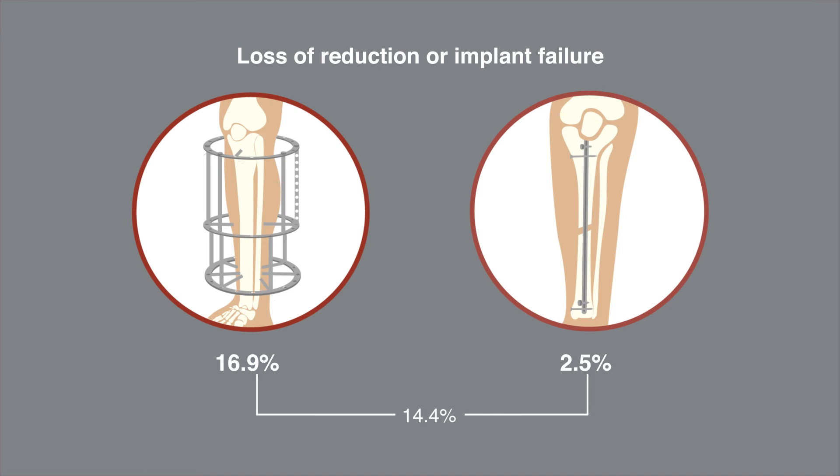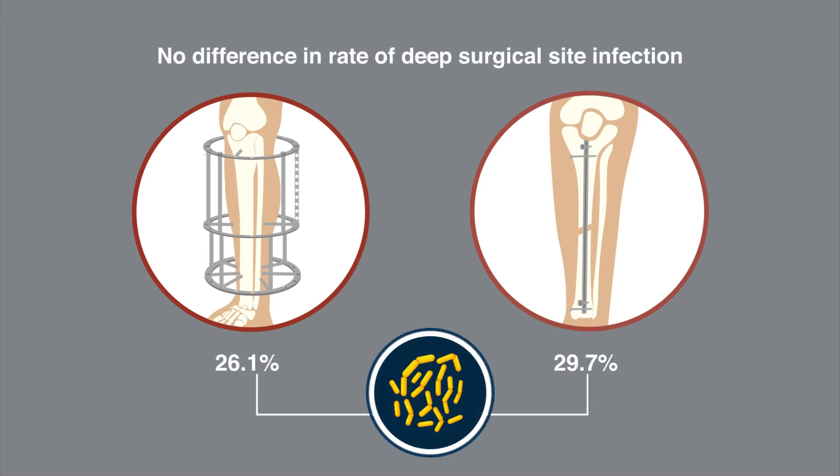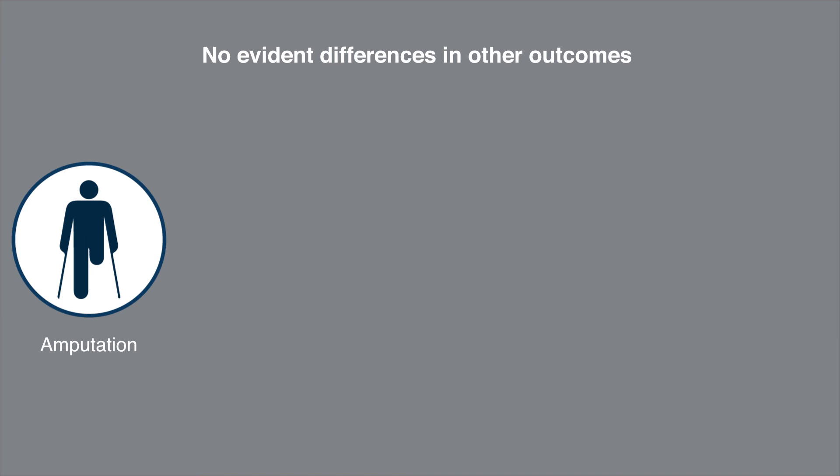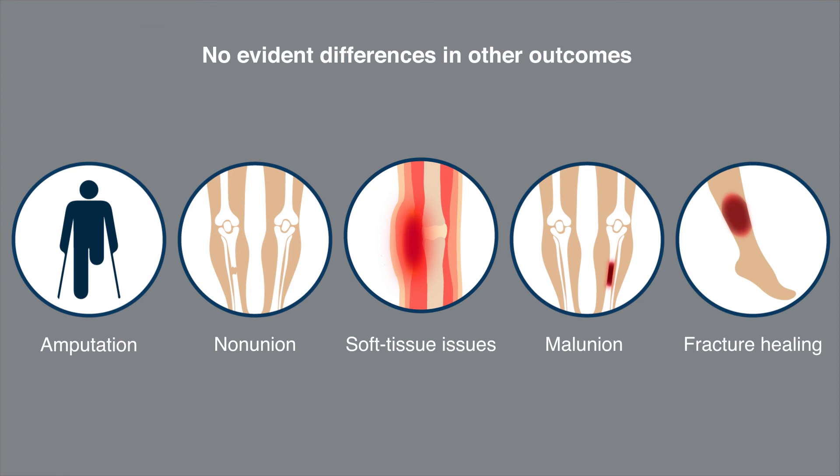The most surprising finding was that there was no difference in the rate of deep surgical site infection between treatment arms. There were also no evident differences in the probabilities of amputation, nonunion, soft tissue issues, malunion, or fracture healing.